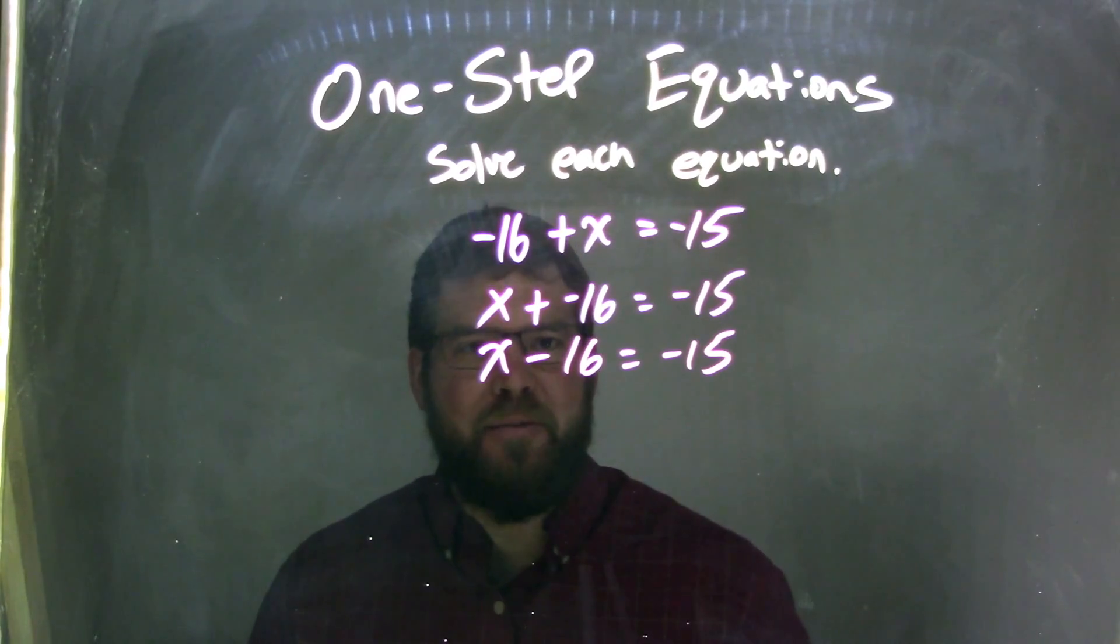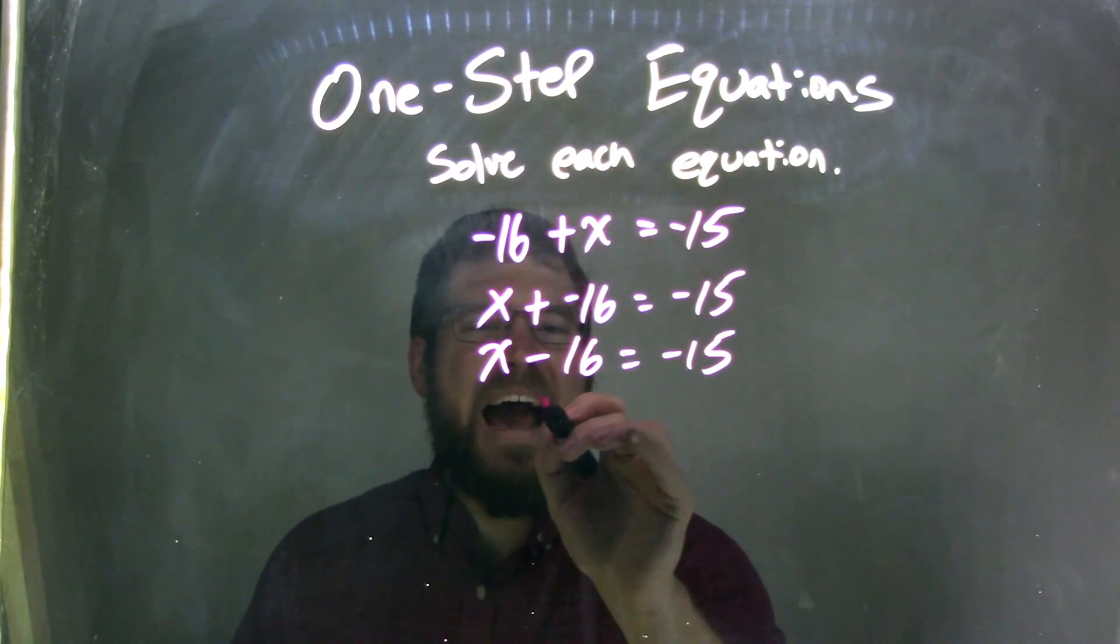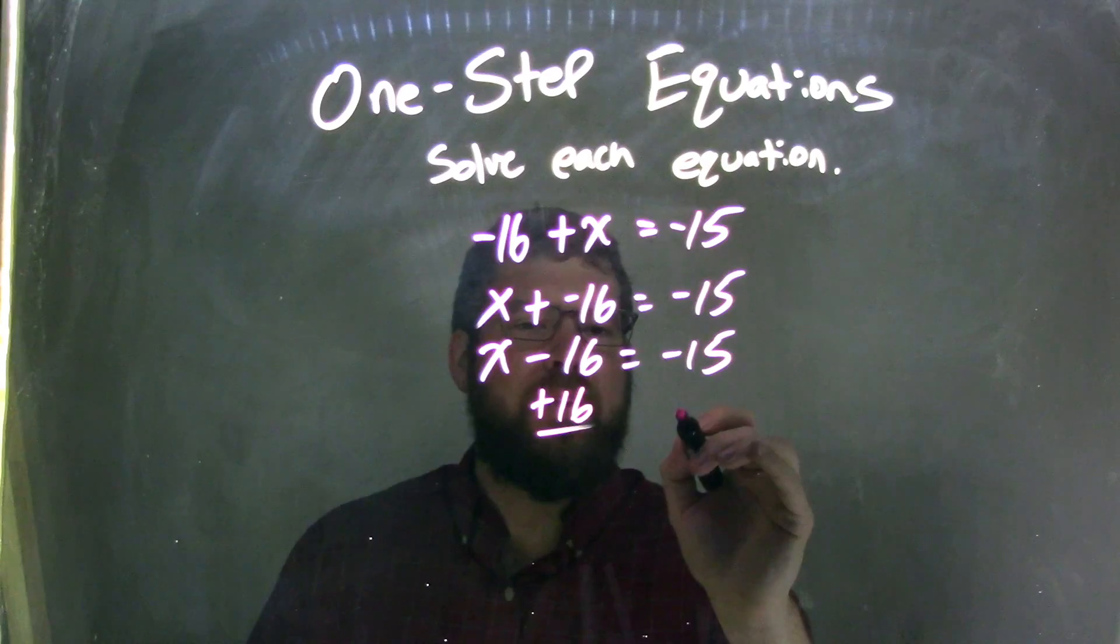Ah, now we can see it, right? Adding a negative is the same thing as minus. So, if I add a 16 to both sides, that's opposite of that subtraction.